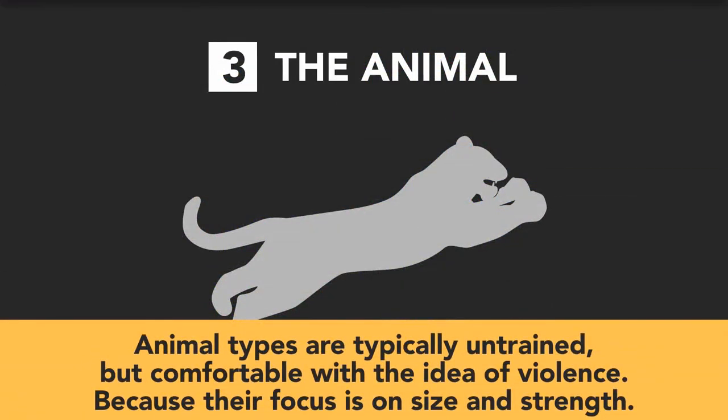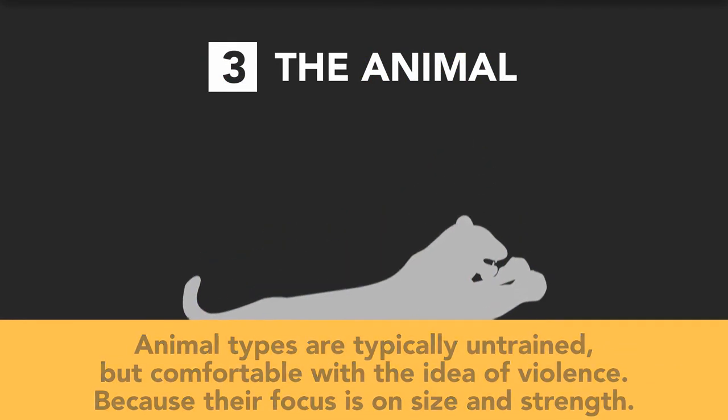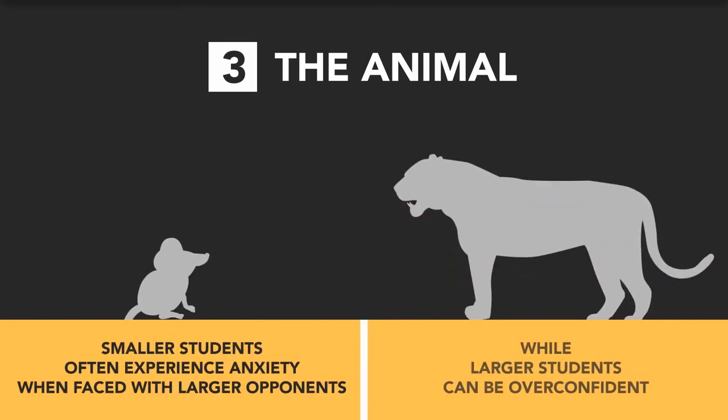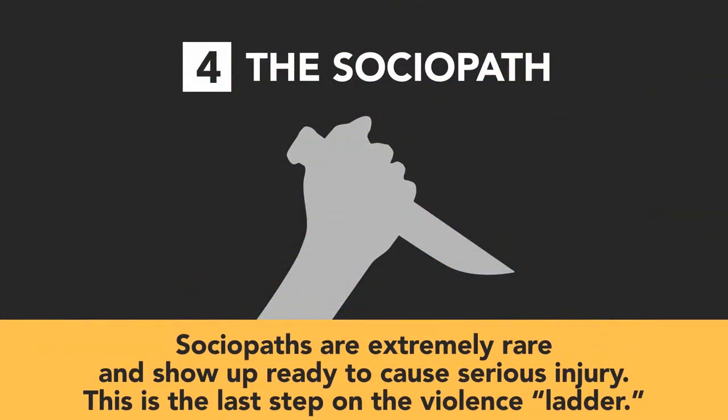Animal types are typically untrained but comfortable with the idea of violence because their focus is on size and strength. Smaller students often experience anxiety when faced with larger opponents, while larger students can be overconfident. Sociopaths are extremely rare and show up ready to cause serious injury. This is the last step on the violence ladder.